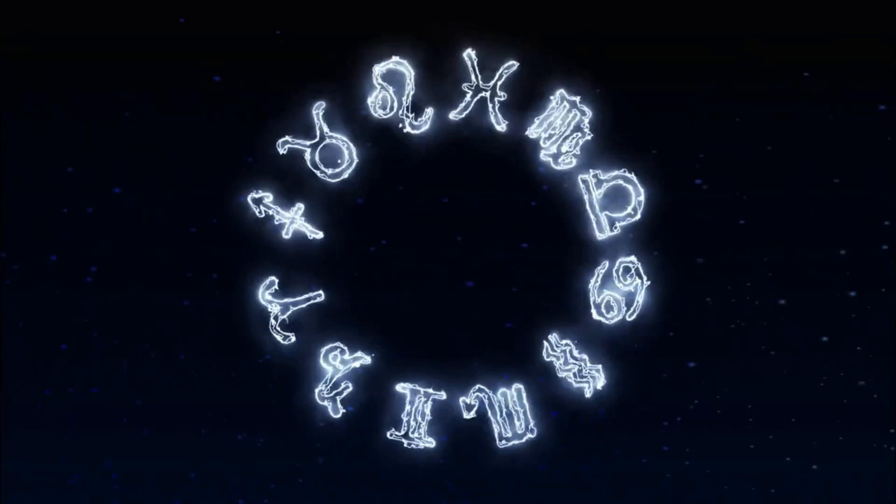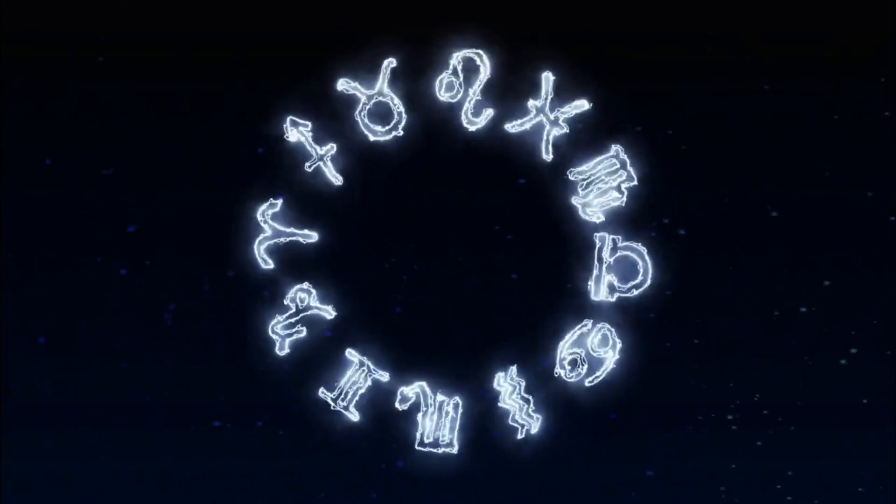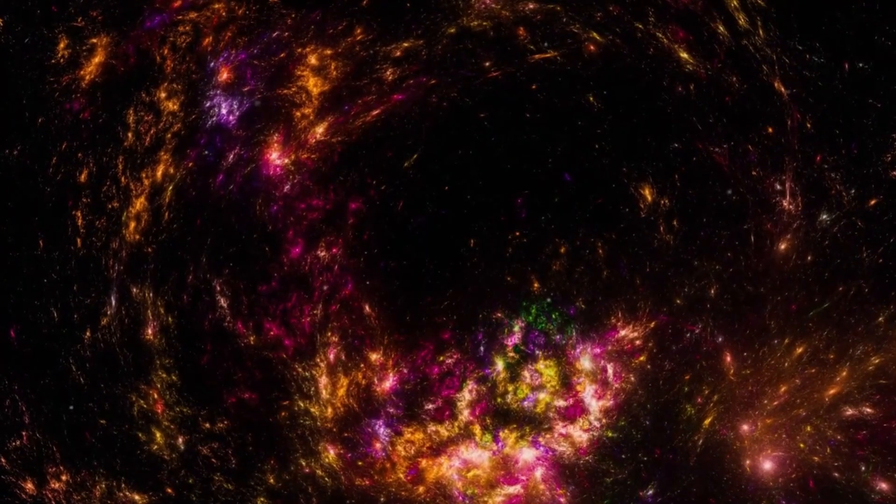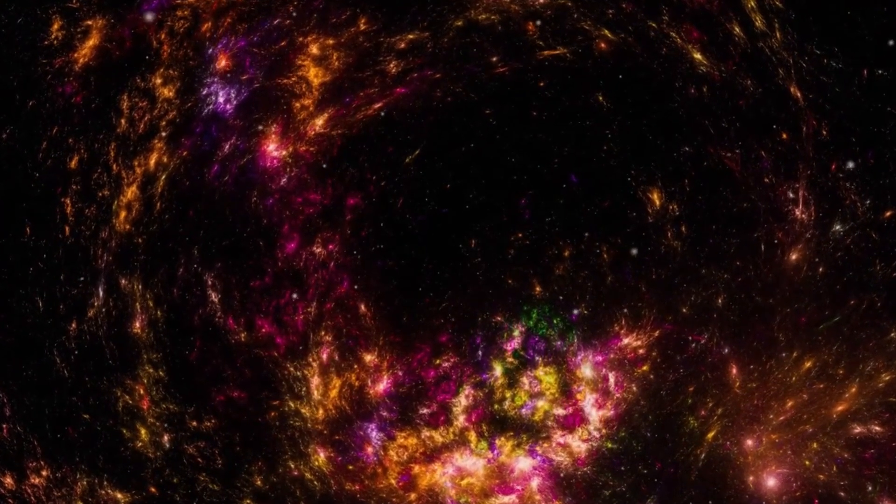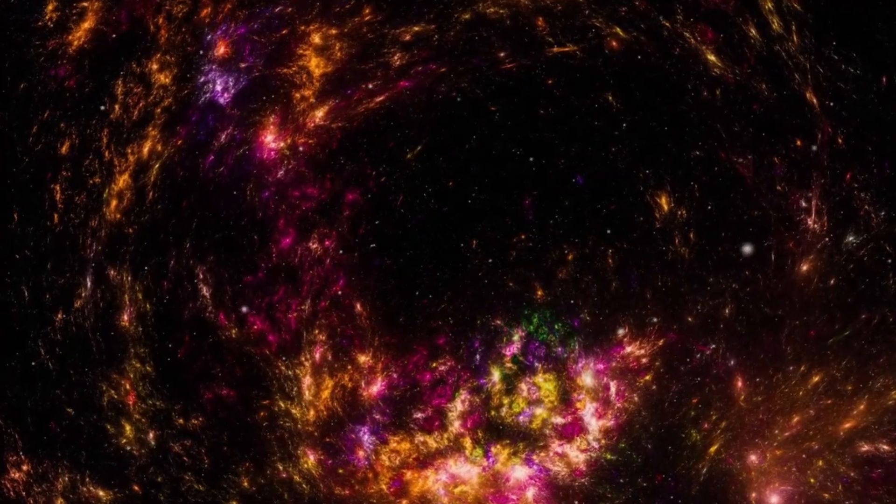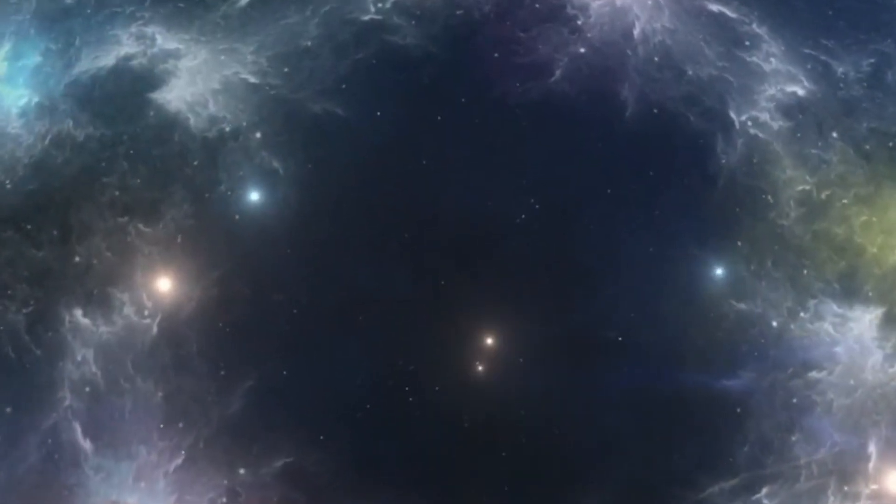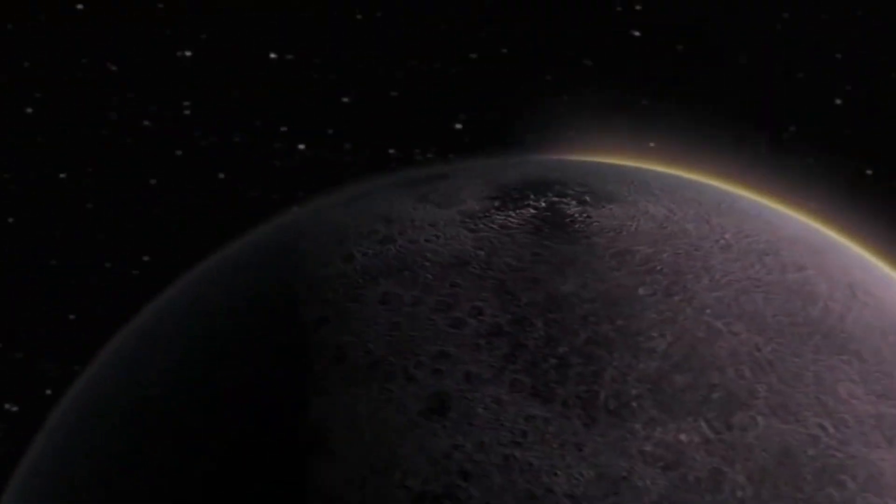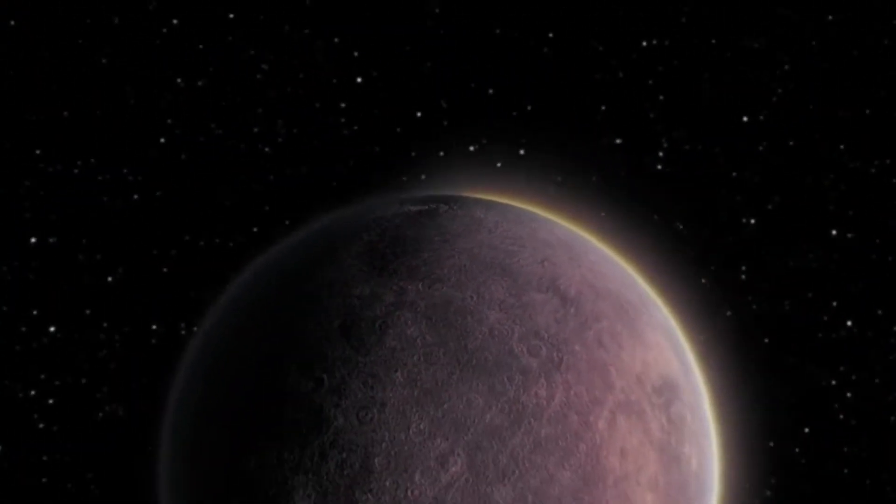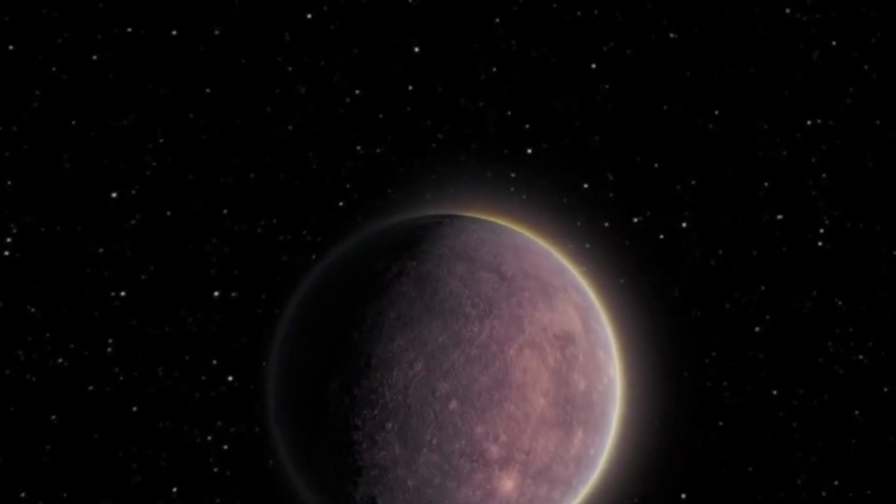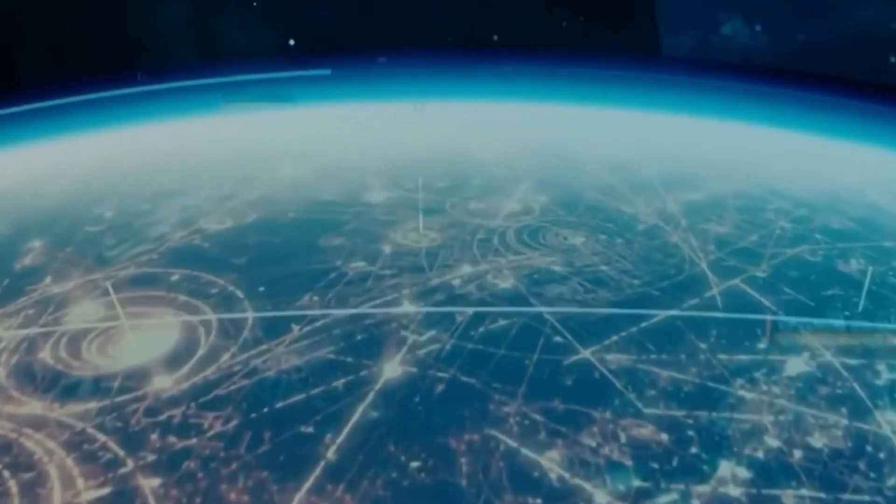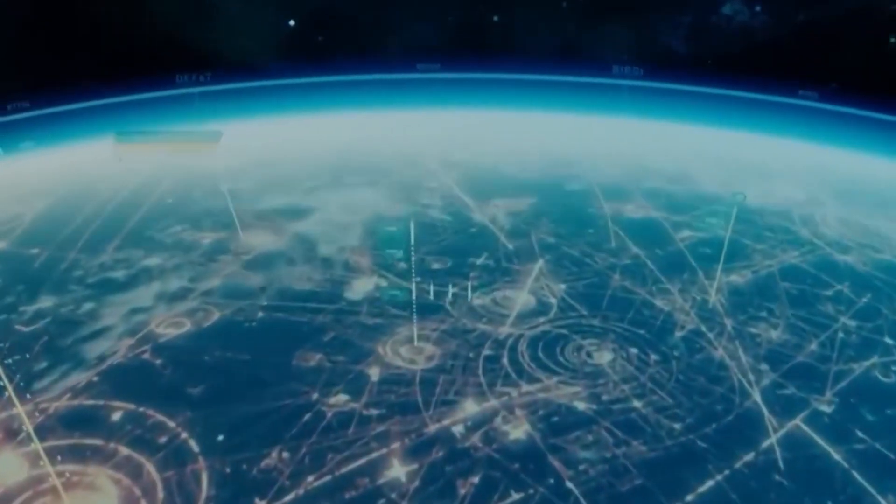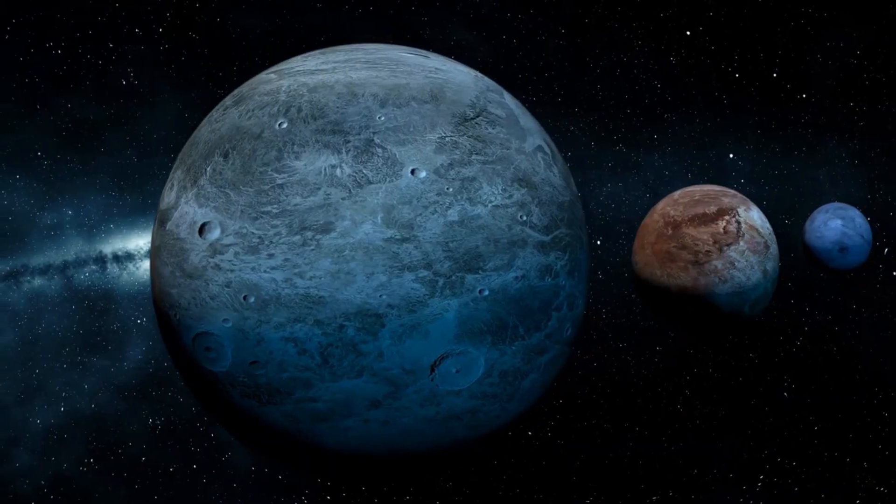This exoplanet, located in a distant star system, had previously garnered attention because of its location within the habitable zone, where conditions could potentially support liquid water and life. Until now, evidence from such planets has been largely limited to atmospheric compositions, signs of water vapor, and surface temperatures. The recent data captured by the JWST offers something far more tantalizing—light emissions from the planet that bear the signature of artificial illumination.